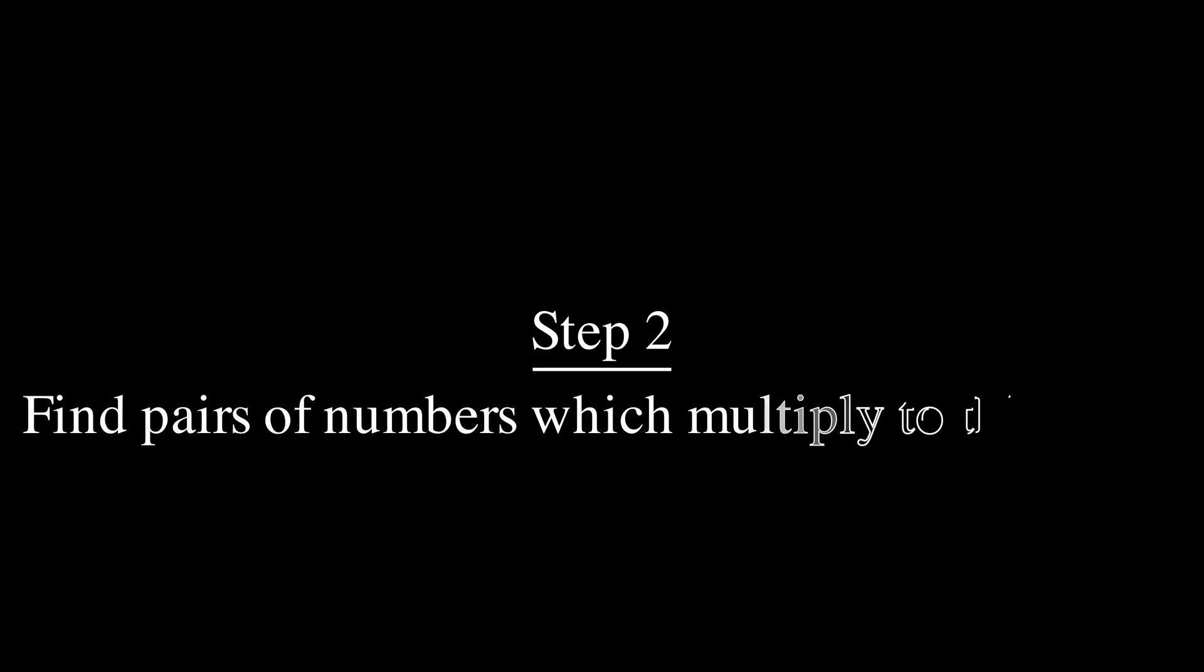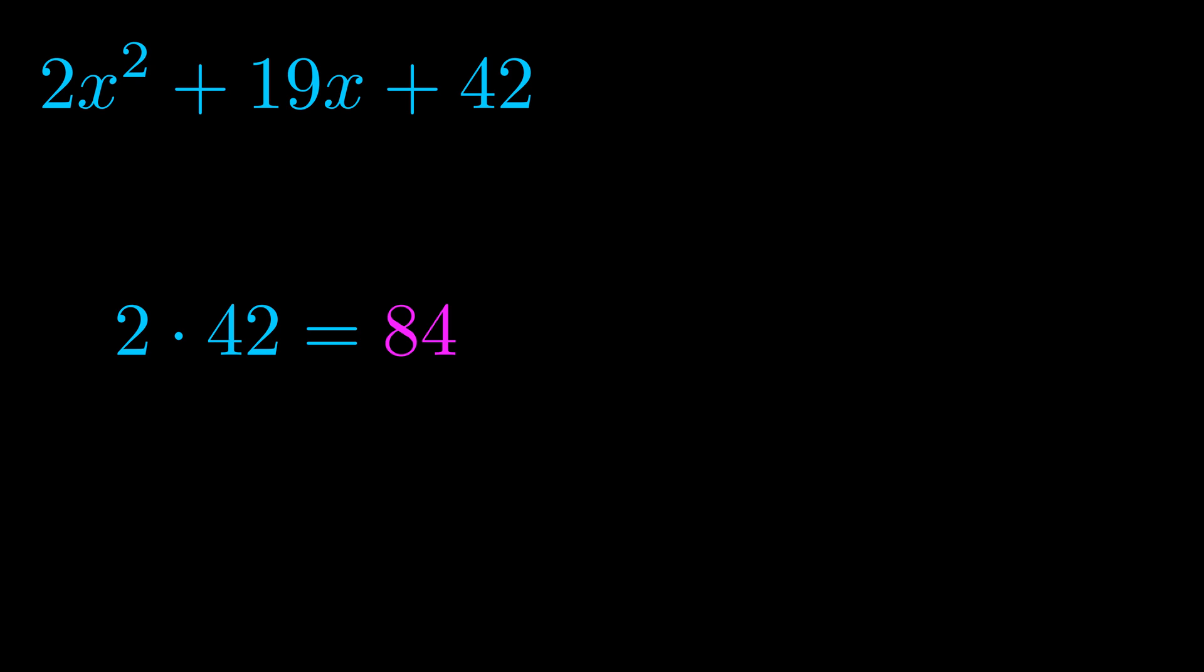Step two is to try to find all of the pairs which multiply to this number. Now it turns out you don't really need to find all of them, but go ahead and write down as many numbers as you can that multiply to the magenta value for now. Pause the video and resume when you're ready to continue.